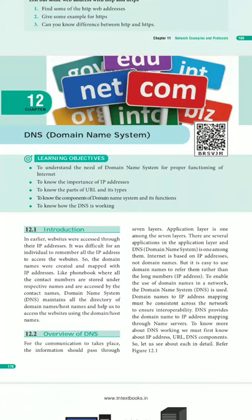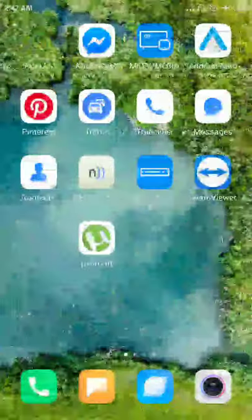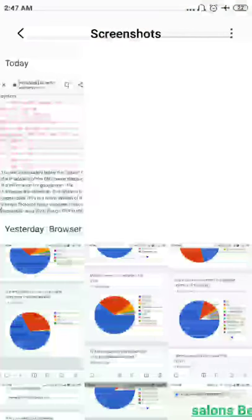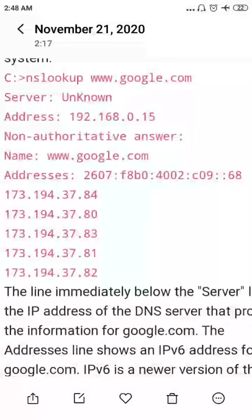So DNS means Domain Naming System. Every website on the internet has an IP address. But we cannot memorize all the IP addresses of every website. For example, the IP address of Google is 173.194.37.84. There are many servers for Google, each having its own IP address, so you can't memorize all of them.